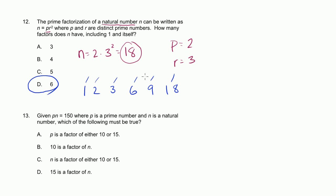You could try it with other numbers. Make p equal to 3 and r equal to 2. Then you'd have 3 times 2 times 2, giving the number 12. Its factors are 1 and 12, 2 and 6, and 3 and 4. You'll see the same thing — exactly six factors.